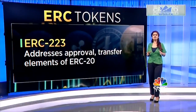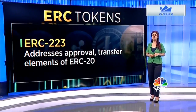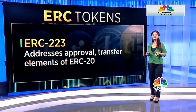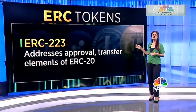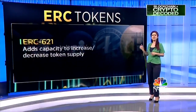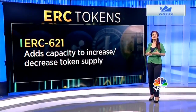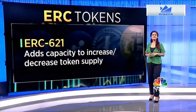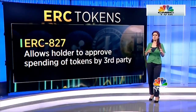While ERC-20 has seen widespread support in the form of new tokens conforming to its standards, several alternative token standards have also been proposed. These include ERC-223, which aims to address approval and transfer elements that ERC-20 perhaps can't. ERC-621 adds the capacity to increase or decrease the total supply of tokens. ERC-827 allows a holder to approve the spending of tokens by a third party.